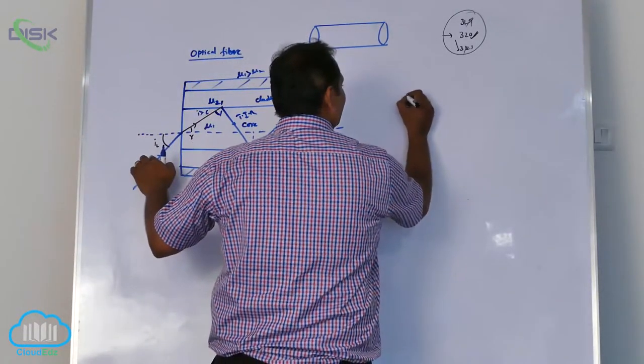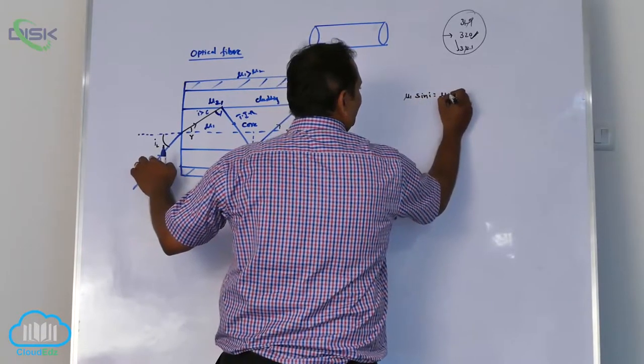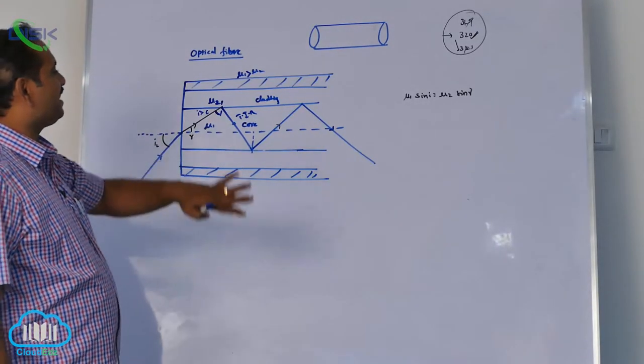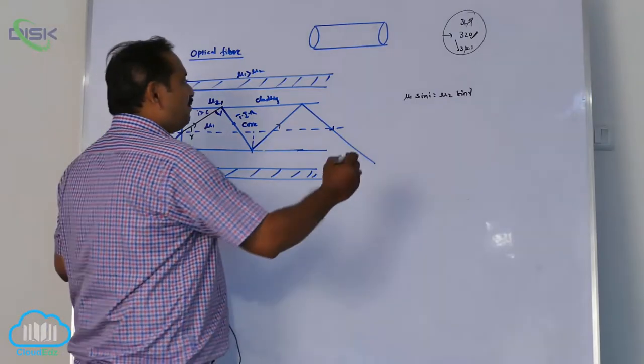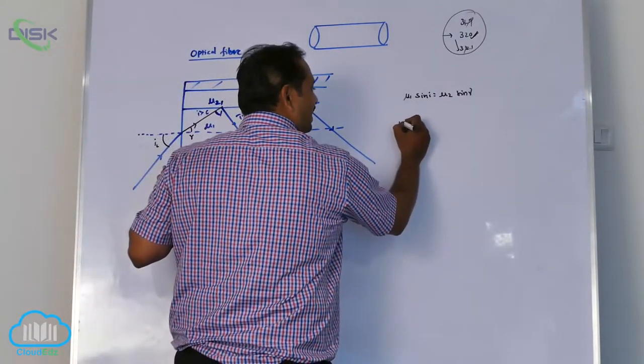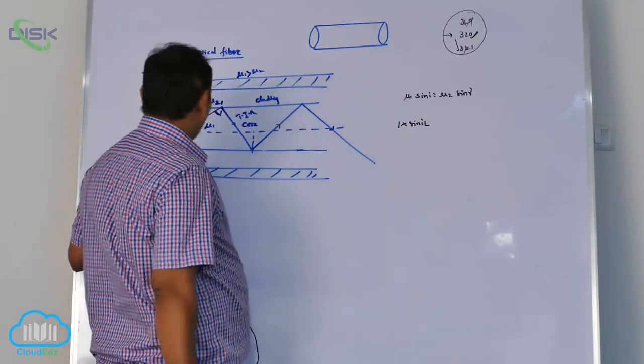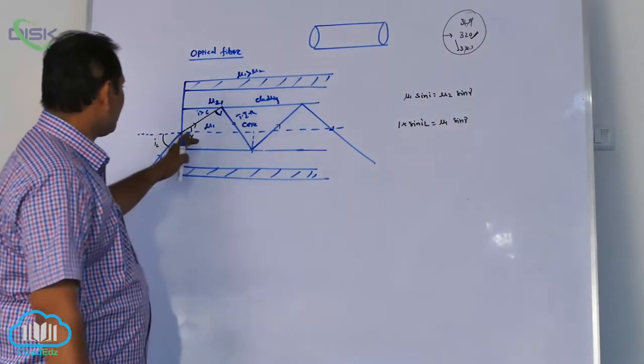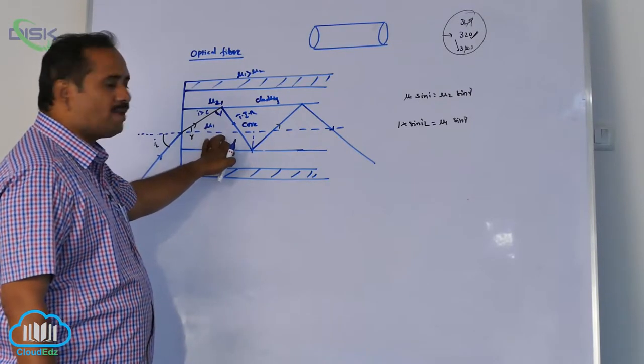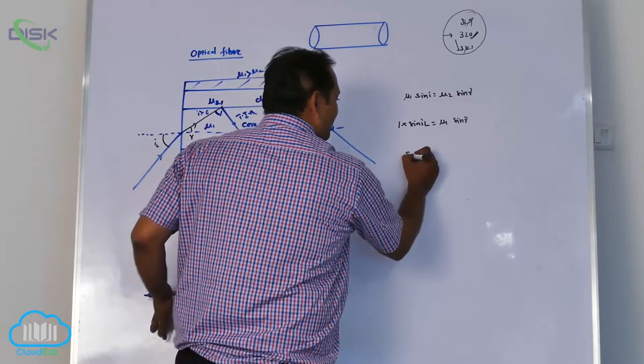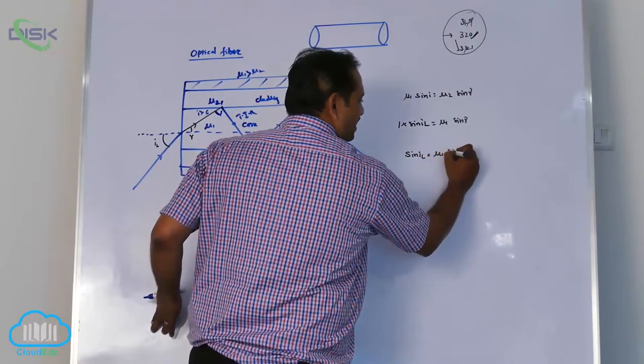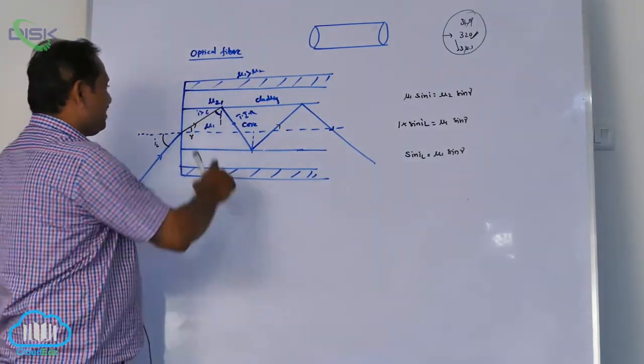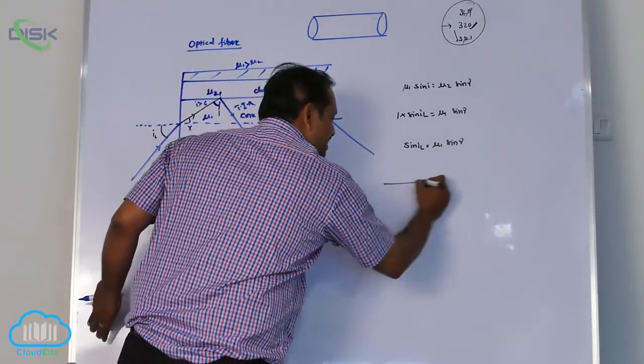First I want to apply Snell's law. Mu1 sin I equal to mu2 sin R. Up to this IPE part enough. For competitive purpose, mu1 is 1 into sin IL. Mu2 is mu1 sin R. From this data, sin IL equal to mu1 into sin R. I am going to think about limiting condition.